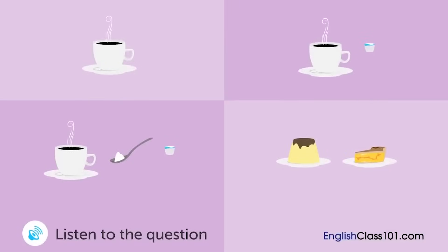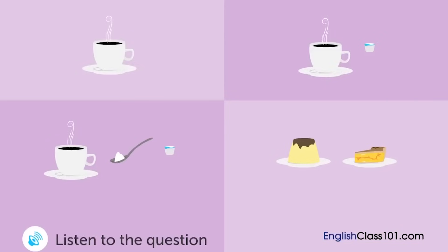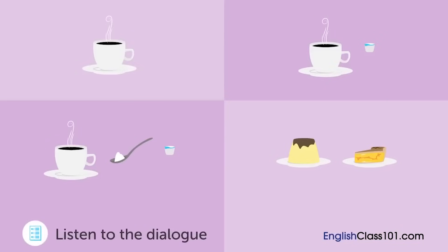A woman is having lunch in a restaurant. What is she going to order? — 'Would you like to have coffee or dessert after the meal?' 'What desserts do you have?' 'We have pudding and apple pie.' 'Actually, I'll just have coffee.' 'Do you want cream or sugar?' 'Cream, please.'